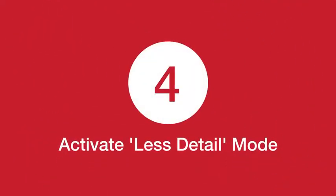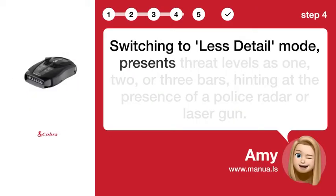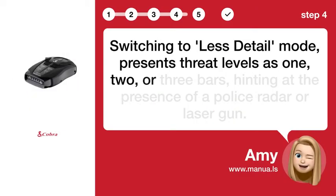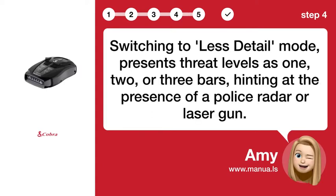Step 4: Activate less detail mode. Switching to less detail mode presents threat levels as 1, 2, or 3 bars, hinting at the presence of a police radar or a laser gun.